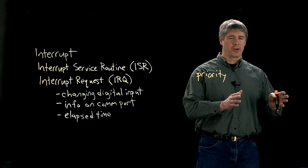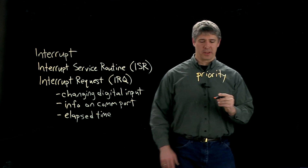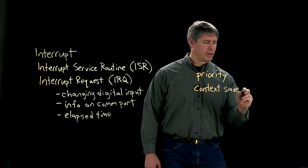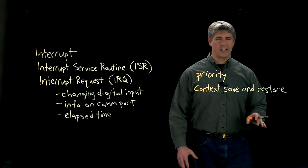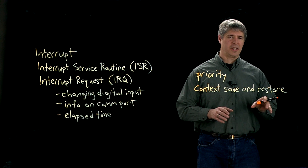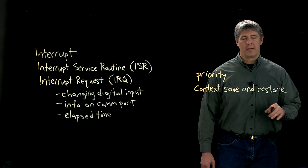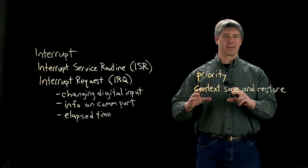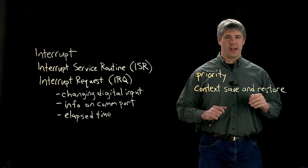The thing that allows us to stop what we're doing, attend to the interrupt, and then go back to what we were doing is something called context save and restore. The context refers to the CPU registers. If you're doing calculations, the CPU is storing partial results that it might later assemble and put into RAM, and those CPU registers carry some context, as well as the current location in the program being executed.